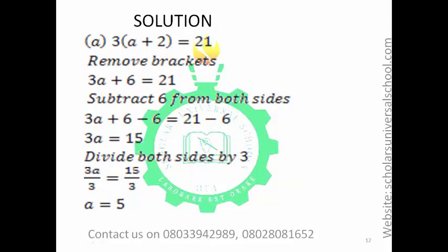Solution for (a): 3(a+2)=21. The first thing you must do is open your bracket, following the rules of BODMAS. Remove the bracket by using 3 to multiply everything inside: 3 times a is 3a, and 3 times 2 is 6. So 3a plus 6 equals 21. Now subtract 6 from both sides because we want 3a to stand alone: 3a plus 6 minus 6 equals 21 minus 6, leaving 3a equals 15.